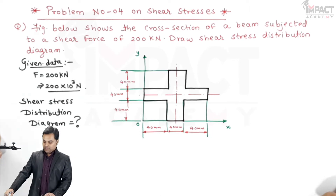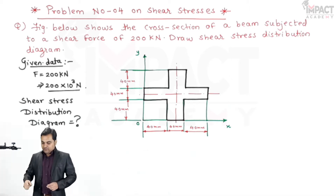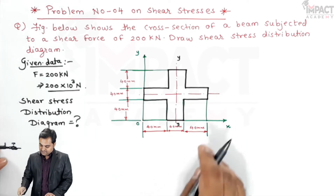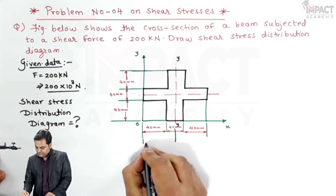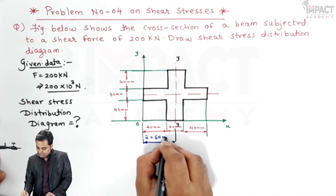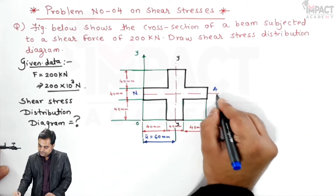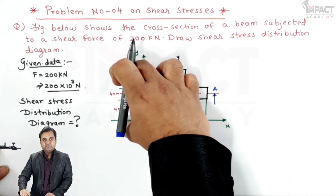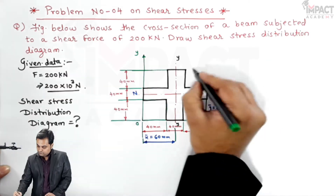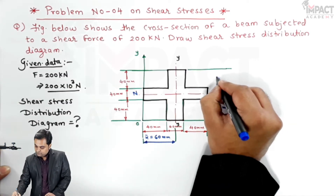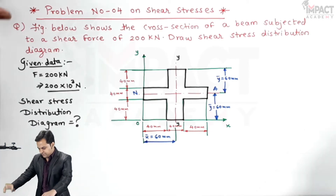Looking at the beam cross-section, it looks like a plus sign and it is a symmetric section. For a symmetric section, the y-axis location: since the total width is 120 mm, half of that is 60 mm, so x-bar is 60 mm. The neutral axis location: since the height is also 120 mm, y-bar is 60 mm from the bottom and 60 mm from the top.